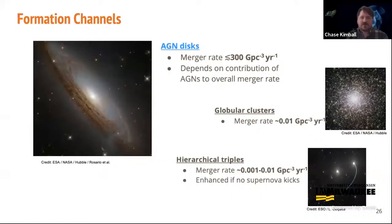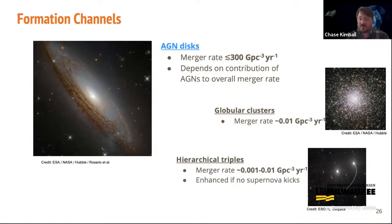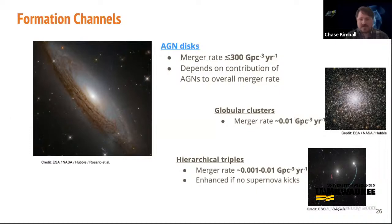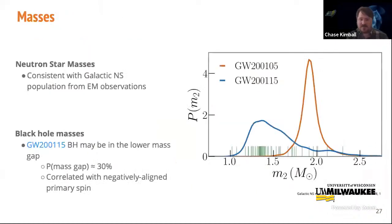Formation in discs of active galactic nuclei, where gas torques and migration traps can drive asymmetric mass mergers, may also produce comparable NSBH merger rates—as high as about 300 mergers per cubic gigaparsec per year—though highly uncertain depending on the fractional contribution of AGN to the overall merger rate. NSBH merger rates from other dynamical channels like globular clusters or isolated hierarchical triples are negligible compared to the measured merger rate, though they can be enhanced if one assumes no supernova kicks. In reality, a combination of the above channels likely contributes to the astrophysical NSBH merger rate.